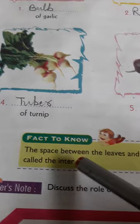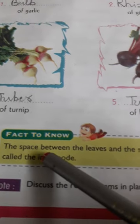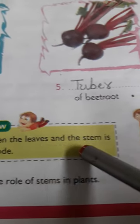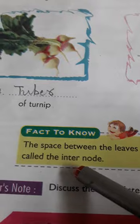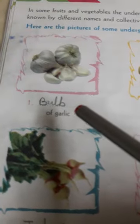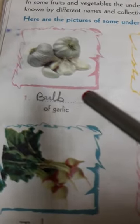In this way the space between the leaves and the stem is called the internode. So you learnt about different forms of stems and their names.